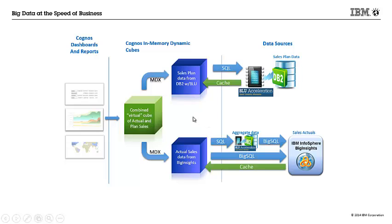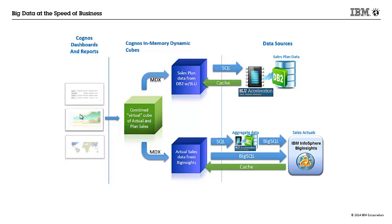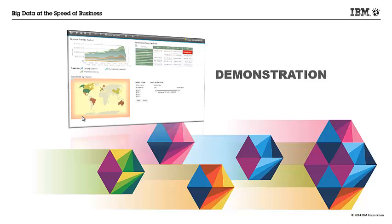In the middle, we have Cognos Dynamic Cubes — one for planned data and one for actual data. Cognos Dynamic Cubes are an in-memory OLAP technology, providing for fast and intuitive analysis. The Cognos Dynamic Cubes use SQL to query DB2 Blue, and also use optimized Big SQL to obtain data from Big Insights. The combined virtual cube provides a seamless and intuitive view into multiple data sources for the end-user. Finally, we have Cognos dashboards and reports on top of the Dynamic Cubes. With that, we will begin our demonstration.